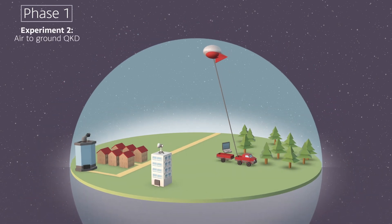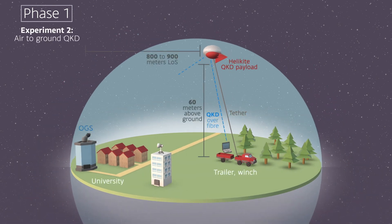Experiment 2 will be an air-to-ground QKD link with the light source carried by a helikite. The 21 cubic meter helikite is able to lift 9 kg payload up to 400 meters altitude.